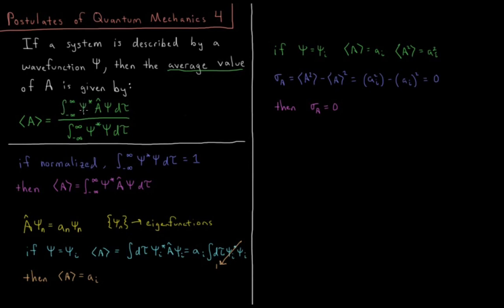The integrand is the complex conjugate of the wave function, psi star, times the operator acting on the wave function psi. This is the expression we've seen thus far in our videos, because thus far we've only been using wave functions that are normalized — wave functions where the integral over all space of psi star times psi equals one. If we do have a normalized wave function, then our expression for the expectation value of A can just be our numerator here.